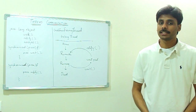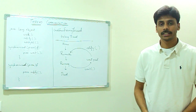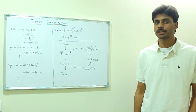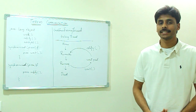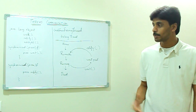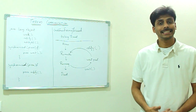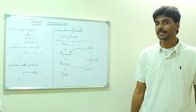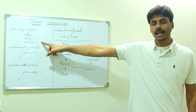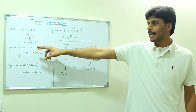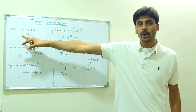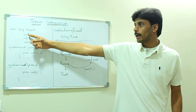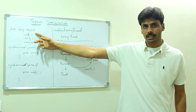From the previous multi-threading presentation on synchronization, you have learned how threads can block each other using synchronized methods and blocks. From this presentation, you will learn how threads can communicate with each other using the methods Wait, Notify, and NotifyAll that are available to every Java class, which they inherit from java.lang.Object.